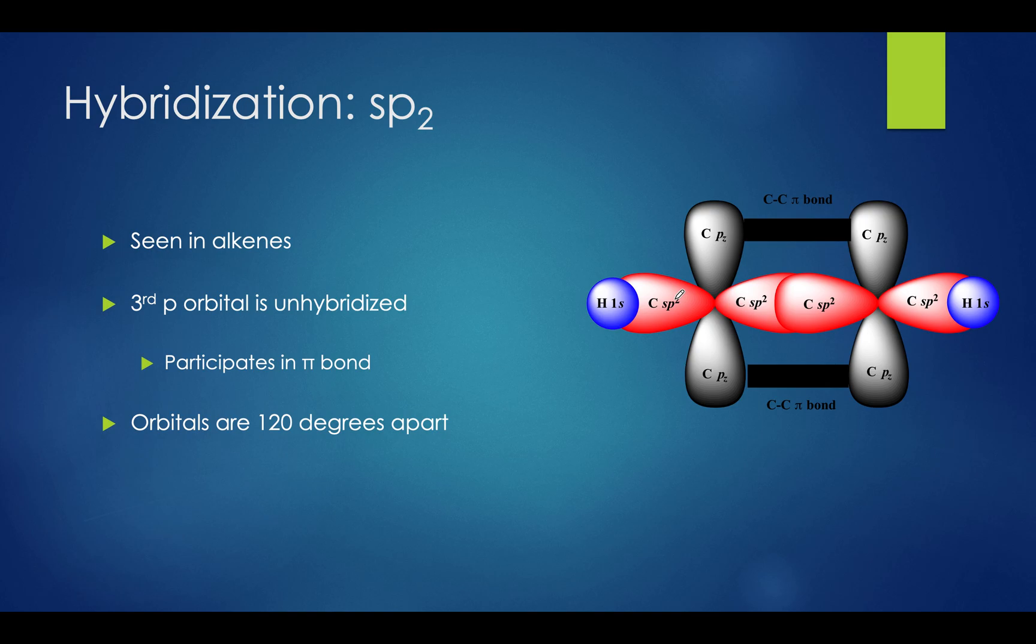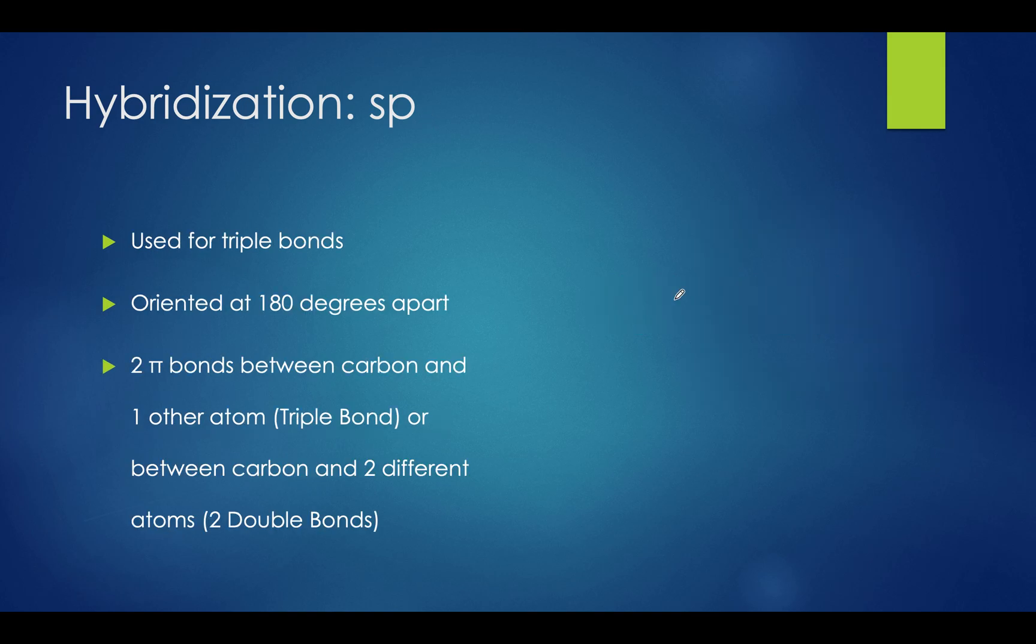So we talked about sp3 and sp2, now let's move on to sp orbitals. Sp orbitals are used for triple bonds, and they are 180 degrees apart from each other. There are two ways an sp hybridized molecule can be expressed. It can either be two bonds that are placed between a carbon and another atom forming a triple bond, so it will look something like ethyne, C triple bond C. This is one option. Or the other way it could be formed is by expressing two double bonds between the carbon and two other atoms, like carbon dioxide. So when you think of an sp hybridized orbital, think of either triple bonds or two consecutive double bonds.